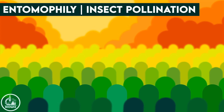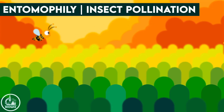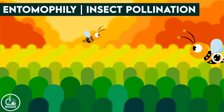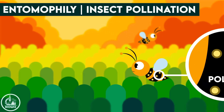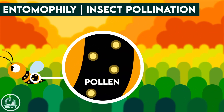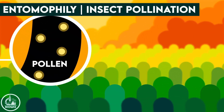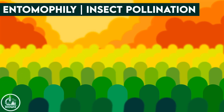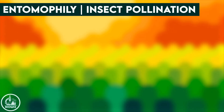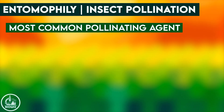Insect pollination or entomophily: the most common type of pollinating agents are the insects. Among all the insect pollinators, bees are the most common agent and contribute to about 75% of the total pollination in flowering plants.